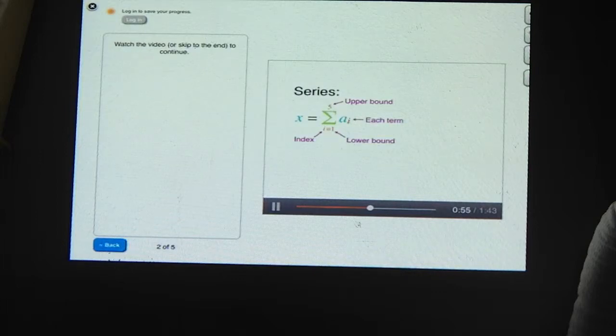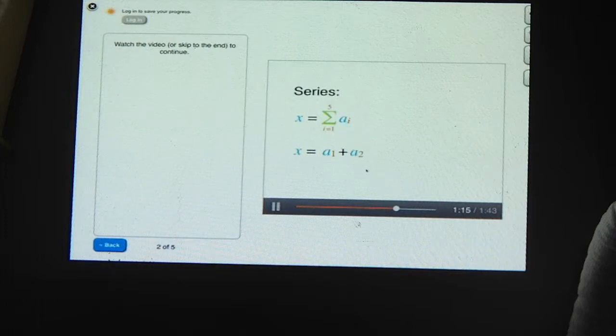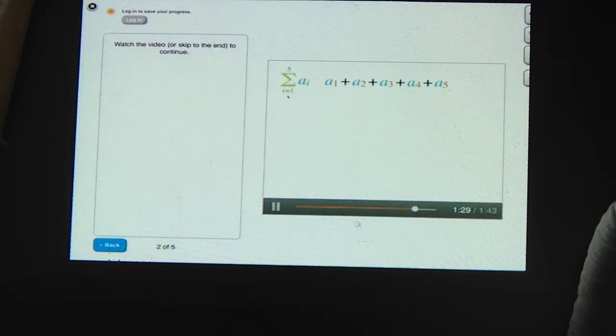And then the expression for each term is written to the right of the sigma. Let's put this all together. Each term looks like the expression to the right of the sigma. But everywhere you see the index letter, which is i in this example, you plug in a number between the lower bound and the upper bound. The first term of the sum is a1, and then we keep adding more terms until the index equals the upper bound of 5. So this expression equals a1 plus a2 plus a3 plus a4 plus a5. So this sigma expression is equal to this sum here.